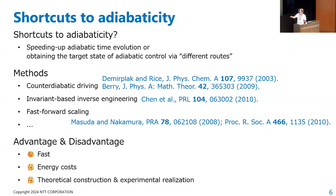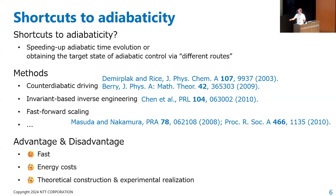The three most famous methods are counter-diabatic driving, invariant-based inverse engineering, and fast-forward scaling. Invariant-based inverse engineering is a very interesting approach, but in this talk I will focus on counter-diabatic driving and fast-forward scaling. The advantage of shortcuts to adiabaticity is that we can speed up adiabatic time evolution. However, there is a disadvantage — energy cost — because there is a universal trade-off between speed and energy in quantum dynamics. Speeding up requires an increase in energy cost.